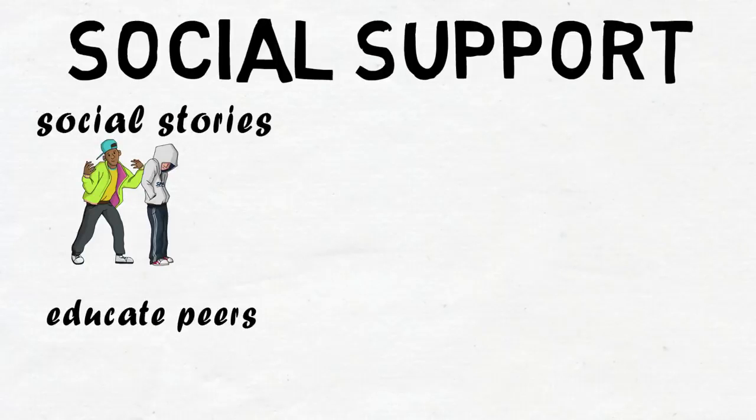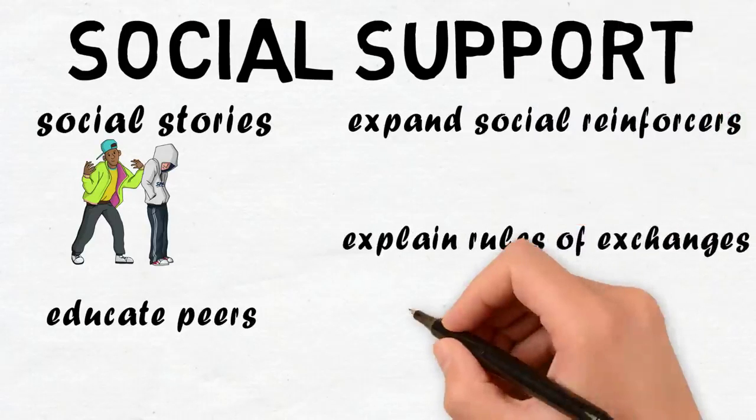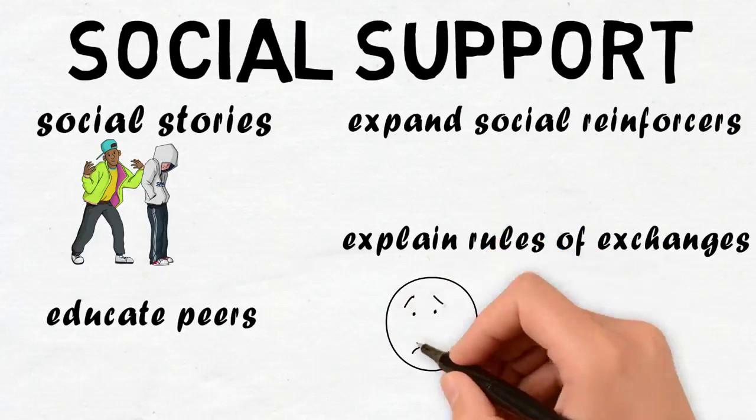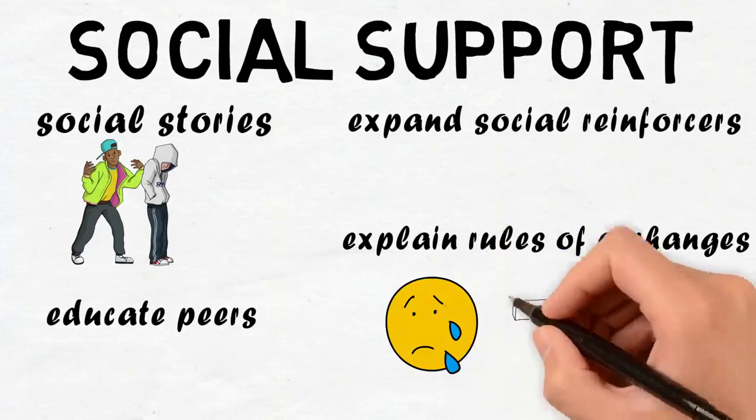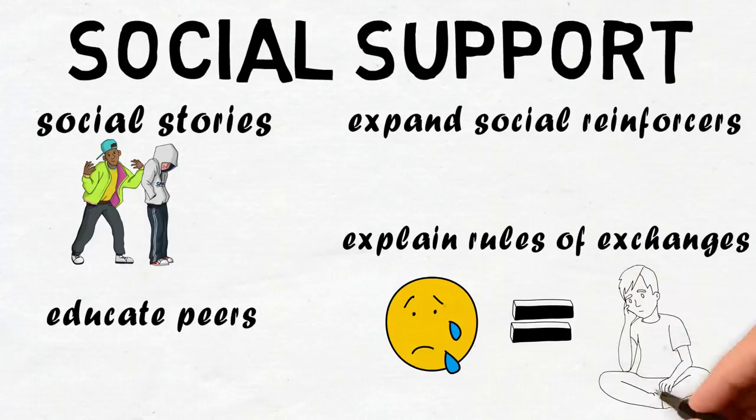Educate peers on what they might perceive as rude behaviors as opposed to what the child with ASD is really trying to convey. Teachers should also work to expand social reinforcers and activities. Explain the rules of social exchange and work on labeling emotions. Teachers need to break down the components of the exchanges, rules, and emotions into verbal and non-verbal components.